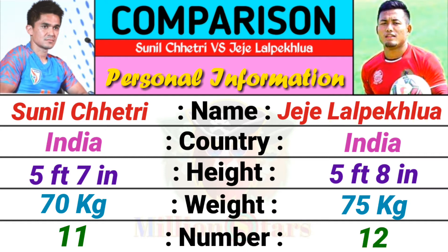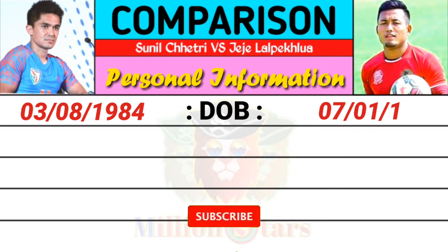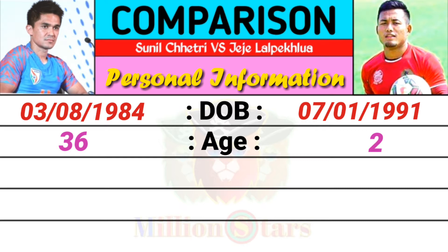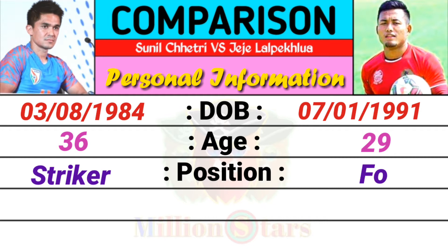Sunil Chhetri date of birth: 3-8-1984. JJ is 7-1-1991. Age: Sunil is 36, JJ is 29. Position: Sunil Chhetri is striker, JJ is forward.